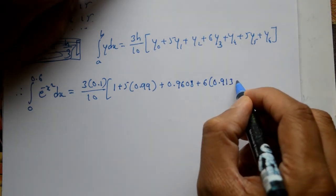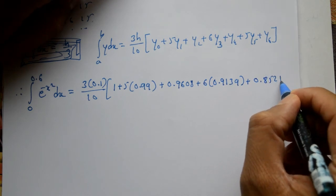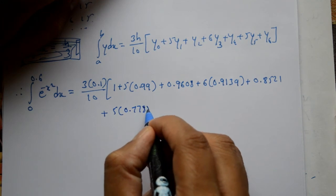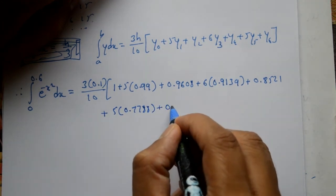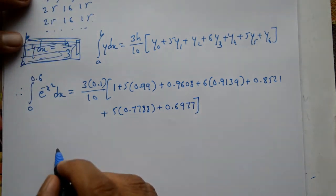Then plus 6 into y3 which is 0.9139, plus y4 which is 0.8521, plus 5y5 which is 0.7788, plus y6 only which is 0.6977.